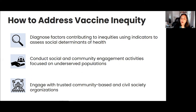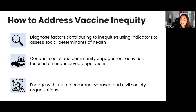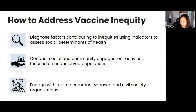To address vaccine inequity, we really need to understand the factors that contribute to inequities. We can do this by using both qualitative and quantitative indicators to assess the social determinants of health in any given community or area. We need to invest in diagnostics, conduct social and community engagement activities focusing on underserved populations, and engage with trusted community-based and civil society organizations.